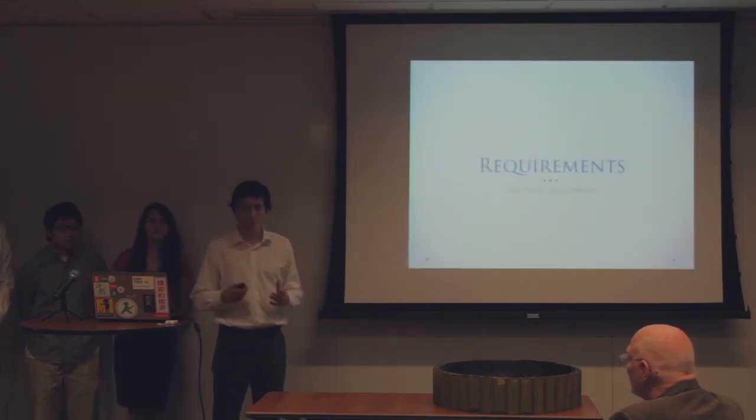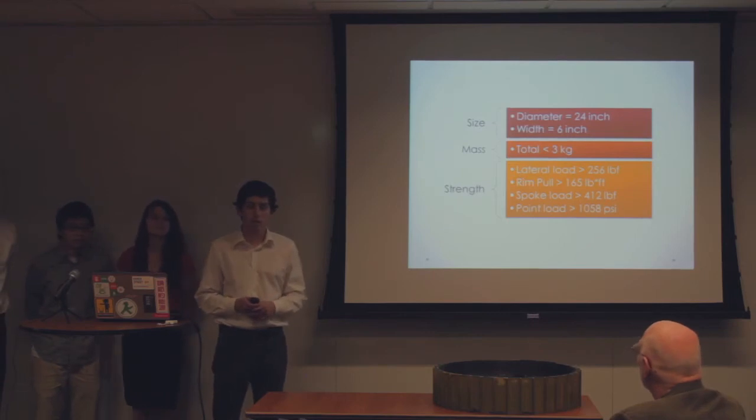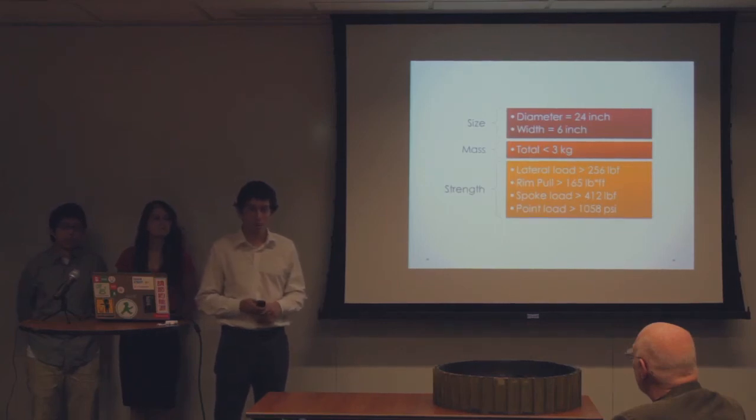So, for our design requirements, here they are. First of all, the sizing of the wheel had to be 24 inches in diameter. It had to be 6 inches in width, which both those sizes are very large for a rover. It's the largest wheels I think we've produced here in Astrobotic. The mass had to be under 3 kilograms, which is a pretty low mass requirement, considering it has to support a 300-kilogram rover.